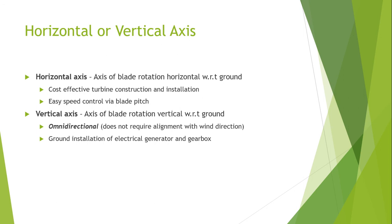Horizontal axis wind turbines are also easy to control in terms of speed, direction, or pitch control, and are easily controllable compared to vertical axis ones. Vertical axis wind turbines are omnidirectional and do not require alignment with respect to wind direction, unlike horizontal axis wind turbines.